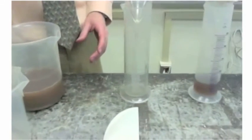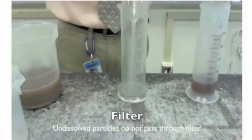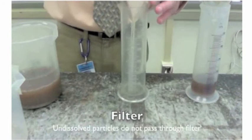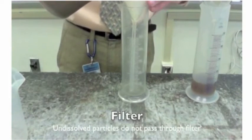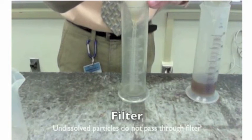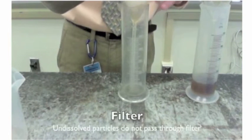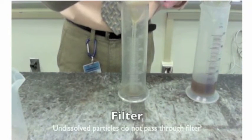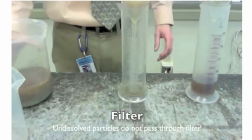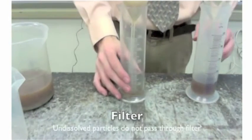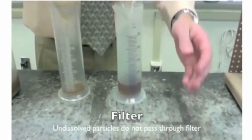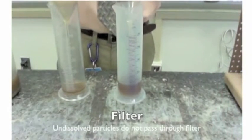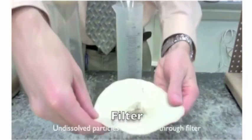For really small particles, we have to use a filter, which is a really fine strainer. Undissolved particles do not pass through the filter. You can see the liquid passing through the filter into the graduated cylinder, but the undissolved particles get stuck in the filter. After a while, the filter will dry, and we have our undissolved particles.